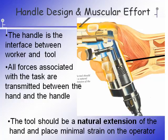The handle of the tool is a natural extension of the hand and your main interface between the worker and the tool. All force associated with the task—whether squeezing the trigger or pushing a drill through wood—is transmitted between the handle and the hand. If you can keep the wrist straight and the point of application of the tool in line with the wrist as much as possible, this minimizes strain on the worker's wrist. When they have to deviate the wrist, that puts them in an awkward posture and muscles have to work much harder.